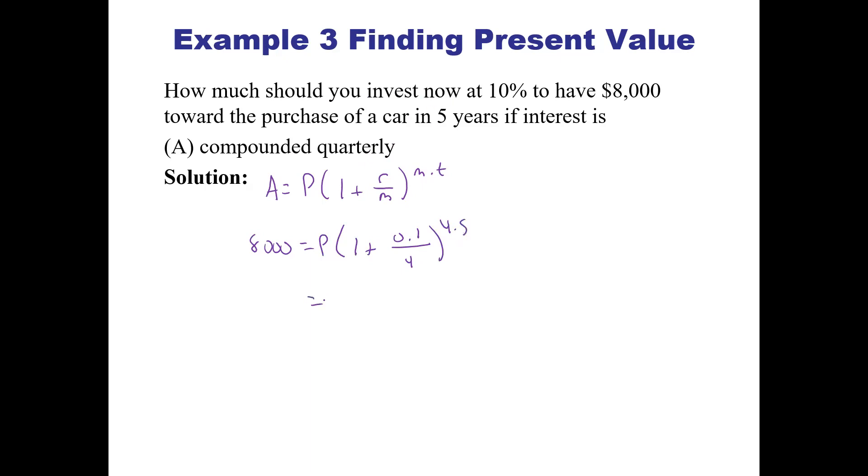What we're going to do is divide to isolate P. Let's not put equals here because we're going to divide all that out. It's best to type one thing into your calculator: 1 plus 0.1 over 4, raised to 4 times 5, and divide 8,000 by that. So P is going to equal what? Let's test that out.